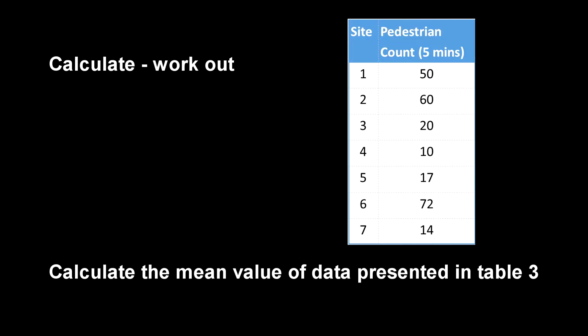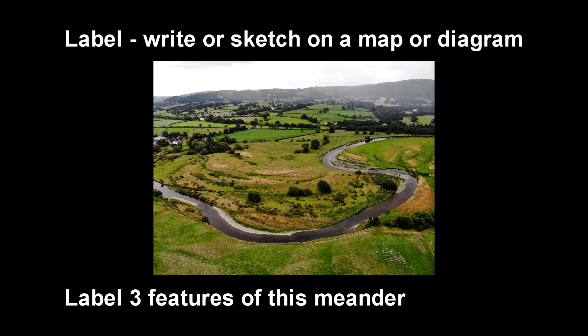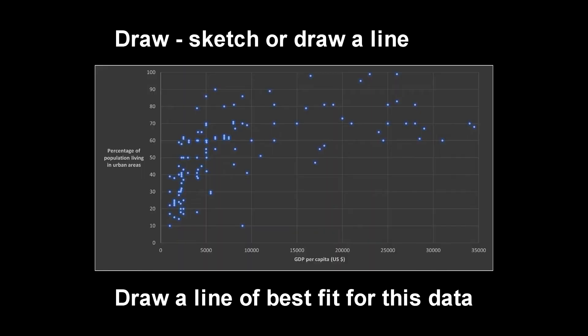Calculate wants you to work out — for example: calculate the mean value of data presented in table 3. Label asks you to write or sketch on a map or diagram — for example: label 3 features of this meander. Draw wants you to sketch or draw a line — for example: draw a line of best fit for this data.